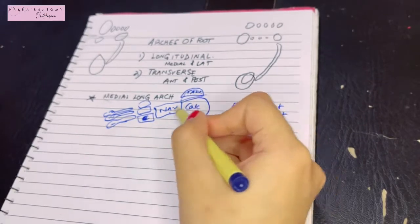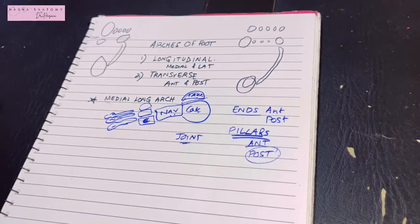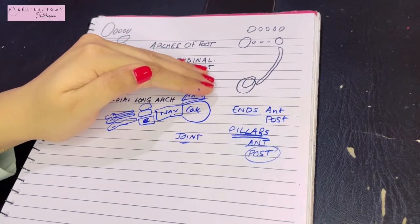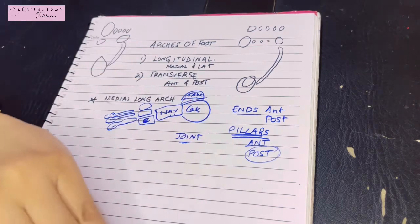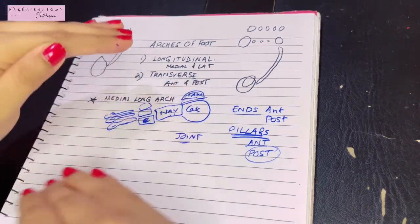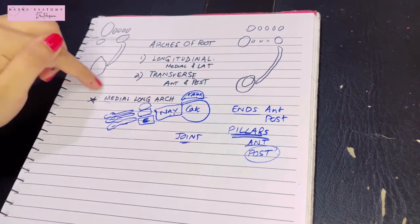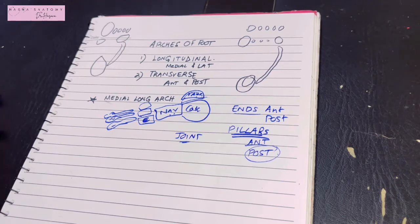The main joint involved in the medial longitudinal arch is the talonavicular joint — also called the talo-calcaneo-navicular joint. Importantly, the medial longitudinal arch is more exaggerated, more resilient, and more mobile than the lateral longitudinal arch. It is also higher than the lateral longitudinal arch.